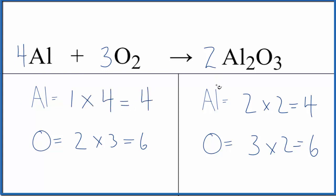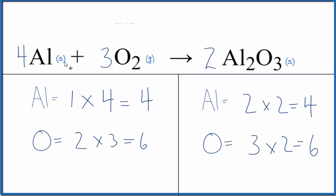This equation is balanced. If we're going to write the states, that would look like this. Aluminum is a solid. We combine that with the oxygen gas. We get the aluminum oxide, which is a solid.